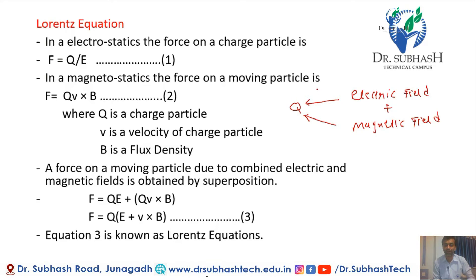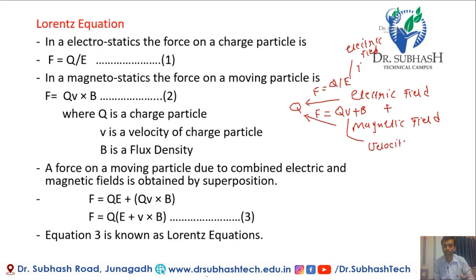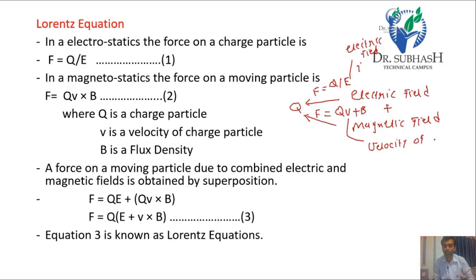Force due to the electric field can be represented by F = QE, where E is the electric field. Force due to the magnetic field is represented by F = Q(V × B), where V is the velocity of the moving charge and B is the flux density.